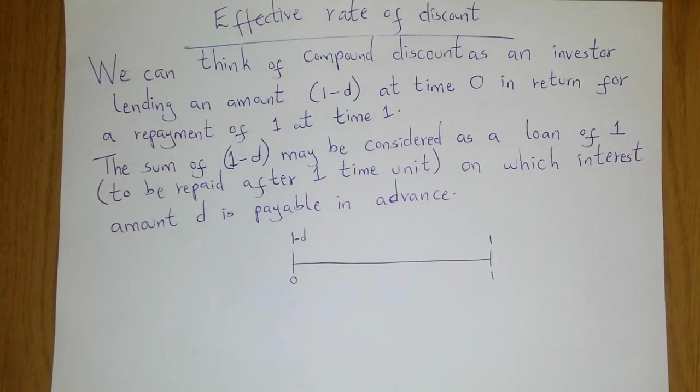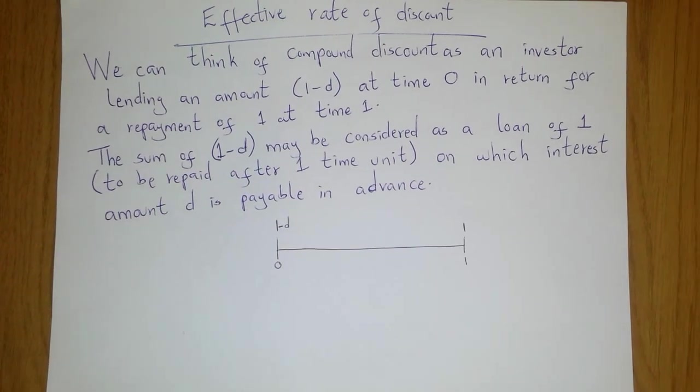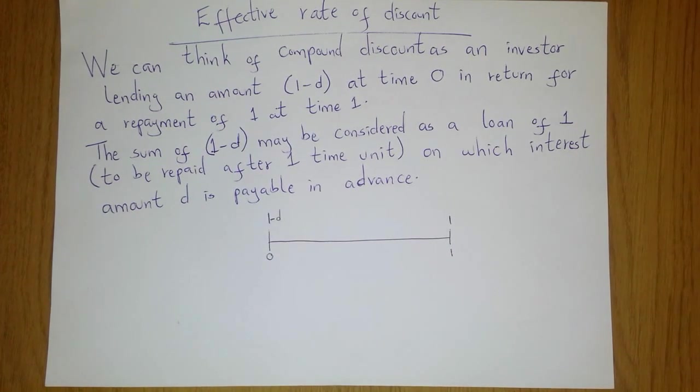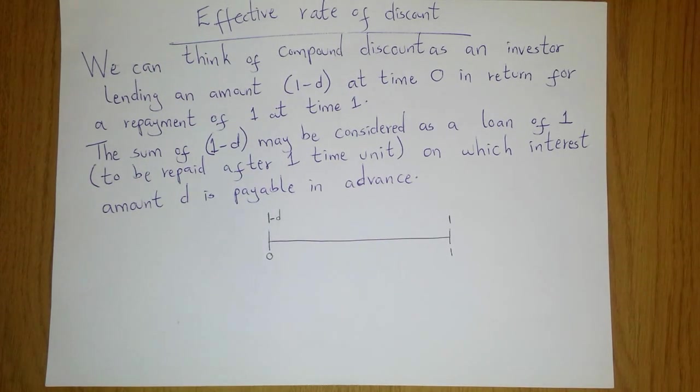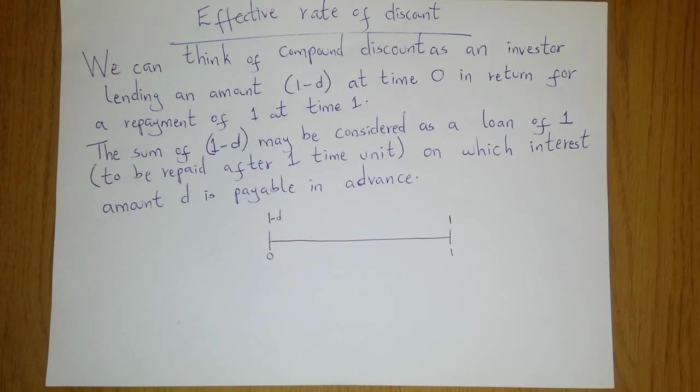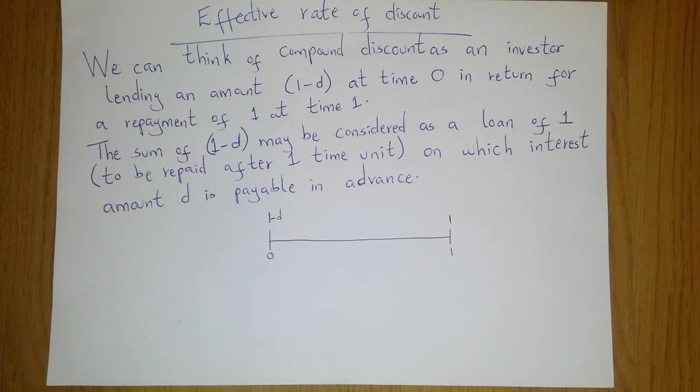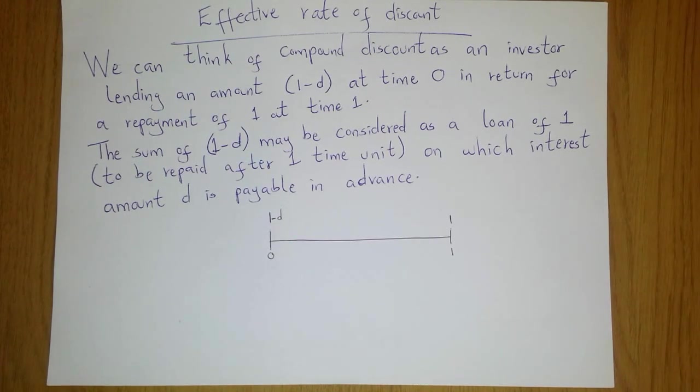Now in the case of effective rates of discount we can think of compound discount as an investor lending an amount 1 minus d at time 0 in return for a repayment of 1 at time 1. The sum 1 minus d may be considered as a loan of 1 to be repaid at time 1 on which interest amount d is payable in advance.